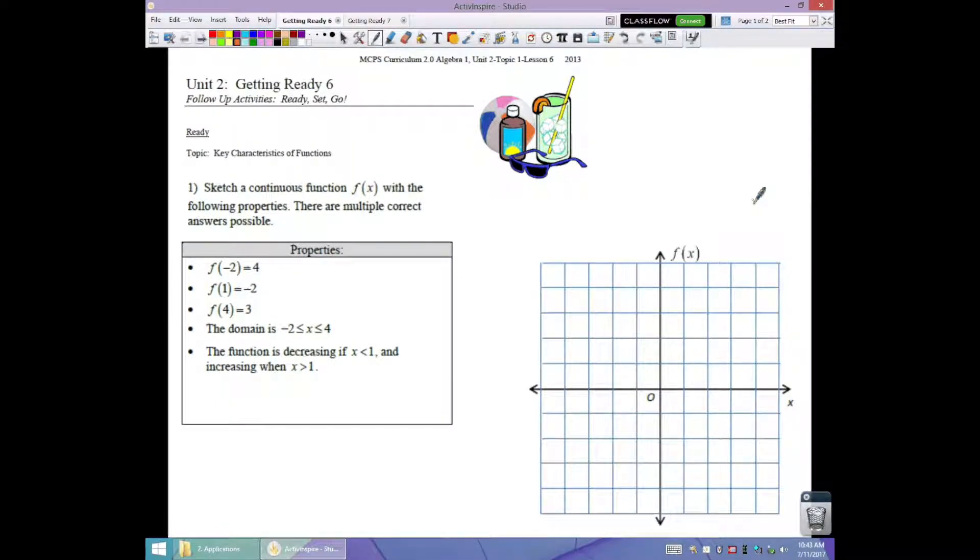Okay, so we are going to create two graphs here that will meet the requirements, the properties that are given. We don't all have to have identical graphs. So when you turn your homework in, it should not be identical to mine, but similar. So in number one, we are going to sketch a continuous function. That means no jumps. It has to be all connected.